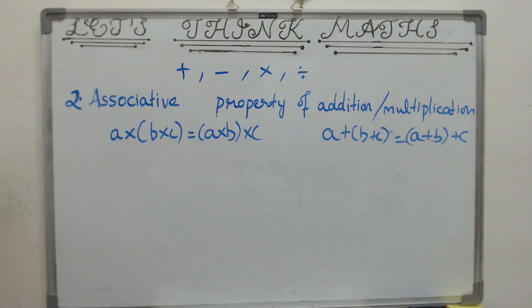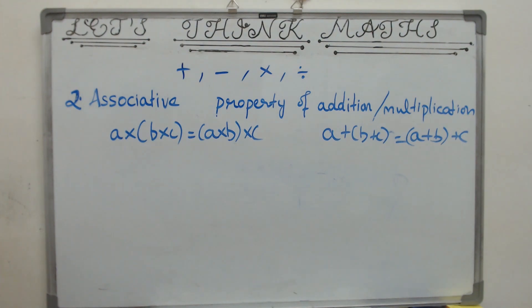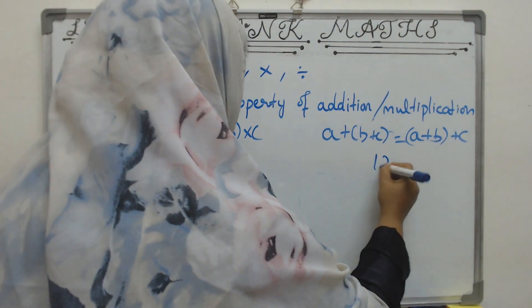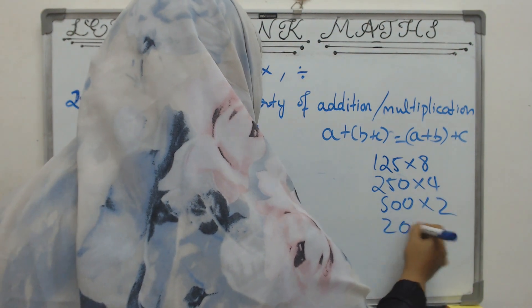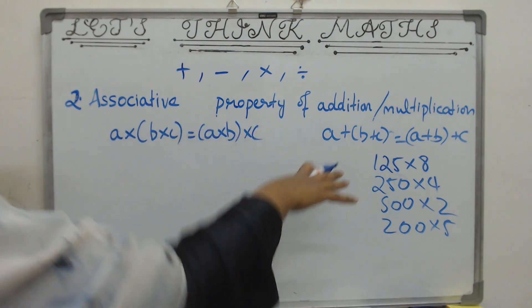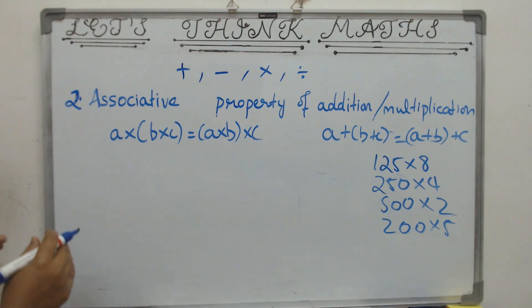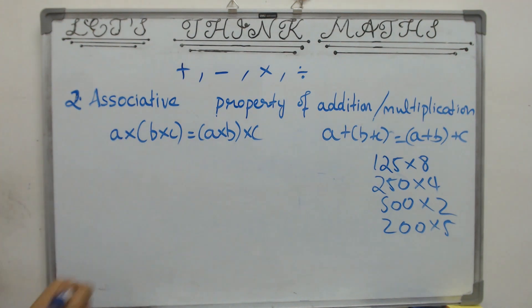How does this help us in our daily life? Before showing an example, you have to know all the factors of the multiples of 10 — anything that ends with 0, like 10, 100, 1000. You must know what numbers multiplied give you 10, 100, or 1000. For example: 125 into 8, 250 into 4, 500 into 2, 200 into 5 — all of these give you 1000. Keep that in mind. I will now show you an example where the associative property makes your life easy and helps you do a complicated calculation in just one minute.